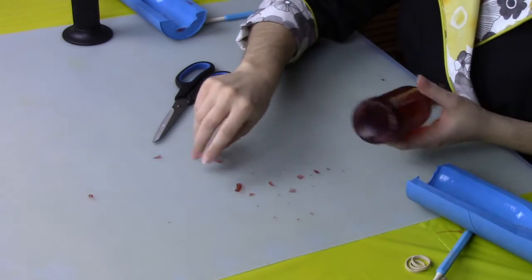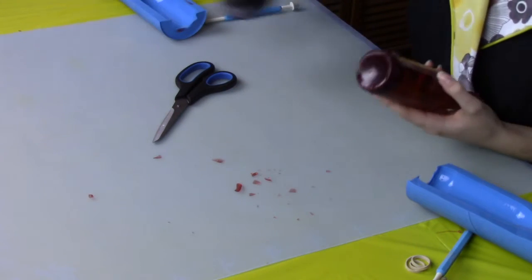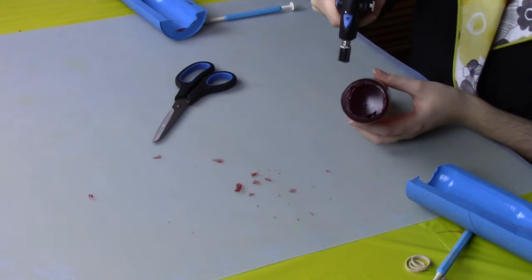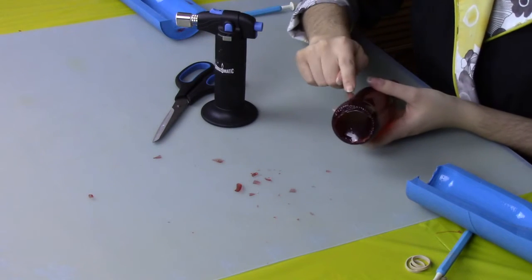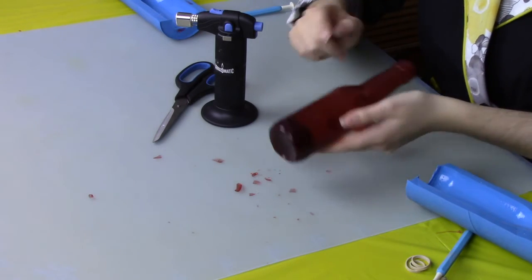You can see I have a really nice closed bottom here on the bottom of my bottle. If you have any kind of imperfections on it, you can very, very carefully take your torch and just smooth those over, being careful to stay on the bottom and don't go anywhere near the hollow bottle.